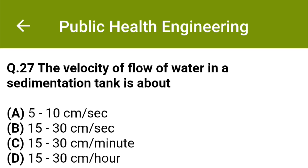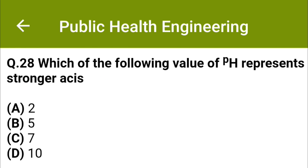The velocity of flow of water in a sedimentation tank is about: option A: 5 to 10 cm/second, option B: 15 to 30 cm/second, option C: 15 to 30 cm/minute, option D: 15 to 30 cm/hour. The correct answer is option C: 15 to 30 cm/minute. Which of the following values of pH represents a stronger acid? Option A: 2, option B: 5, option C: 7, option D: 10. The correct answer is option A: 2.